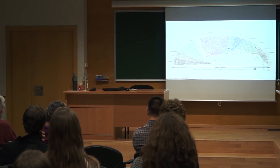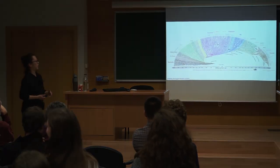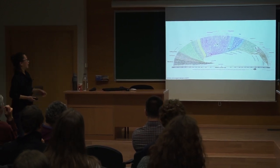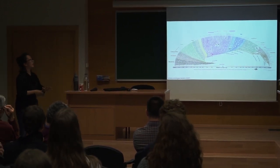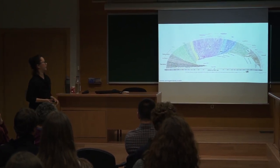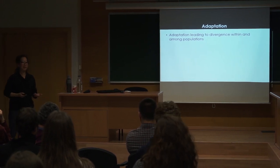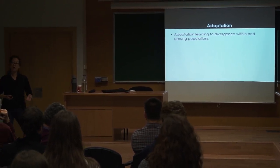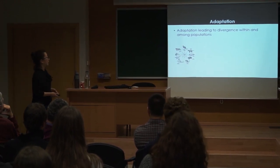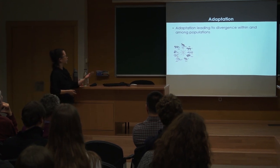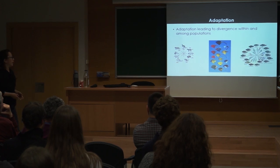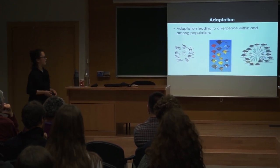One of the prevailing questions in biology is what has generated the biodiversity that we observe today. If you look at the tree of life, you can see we have a lot of diversity, and one of the things that underlies biodiversity is adaptation — both within and among populations. Classic examples of adaptive radiations include the marsupials in Australia, the honeycreepers in Hawaii, and the cichlids in the Great Rift Lakes in Africa.